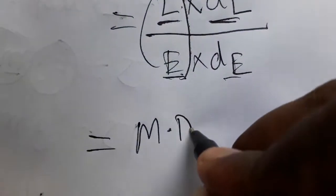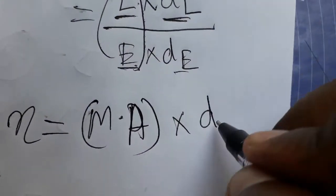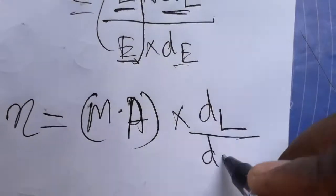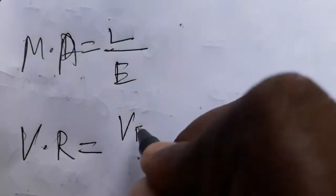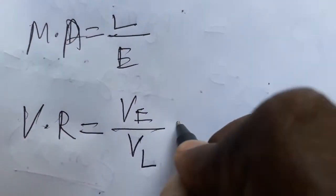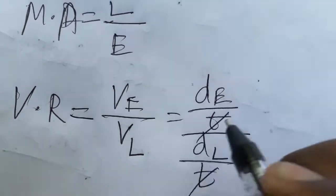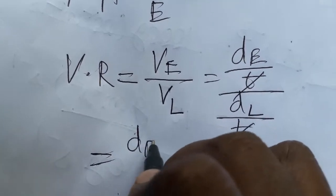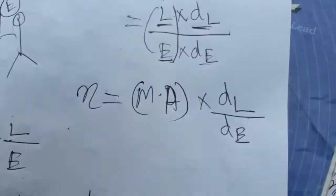Mechanical advantage is equal to load by effort. So efficiency equals mechanical advantage multiplied by displacement of load divided by displacement of effort. Now, velocity ratio is defined as velocity of effort divided by velocity of load, which simplifies to displacement of effort divided by displacement of load (since time cancels out).